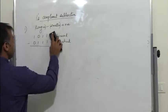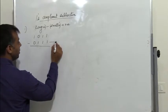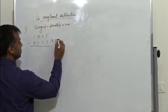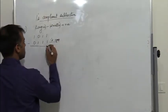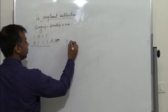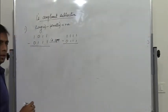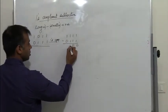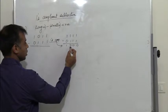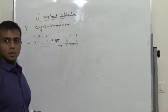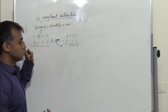When we want to perform 1's complement subtraction, we need to take the 1's complement of the smaller number. To take the 1's complement, we subtract 0111 from all 1's, and we get 1000. So the 1's complement of 0111 is 1000. Alternatively, it can simply be done by replacing 0's by 1's and 1's by 0's.